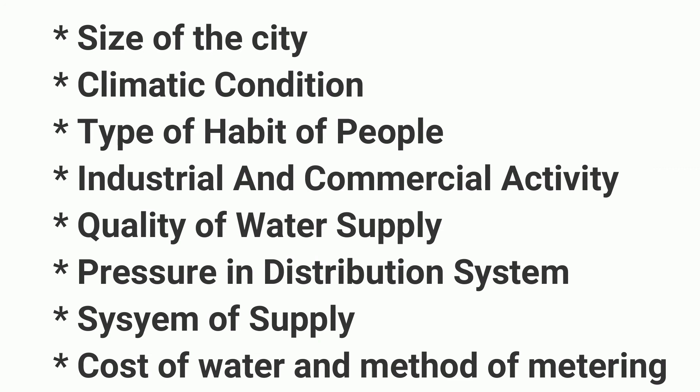Next is the quality of water supply. The quality of water supplied affects demand — if the quality of water is good, people tend to use more of it. Poor quality may reduce usage. So the quality of water supply influences the per capita demand.